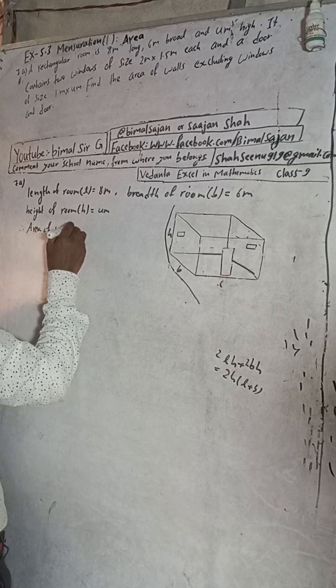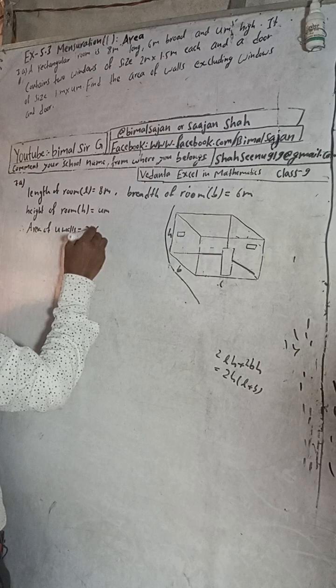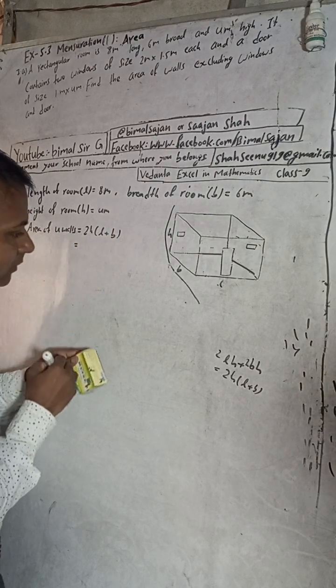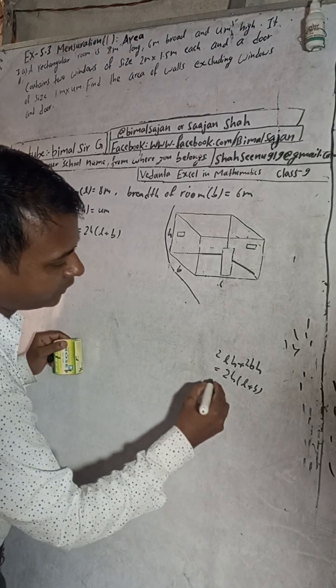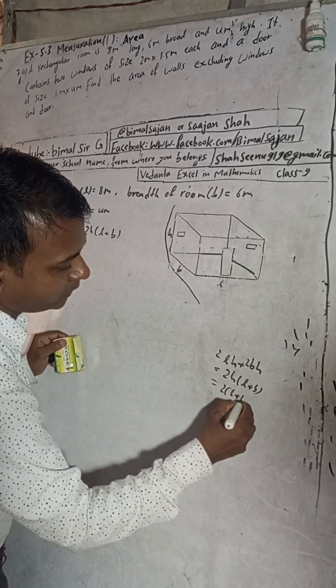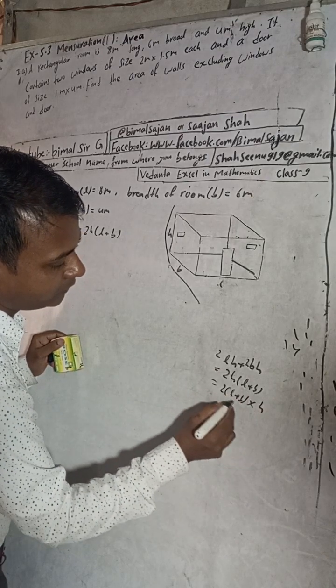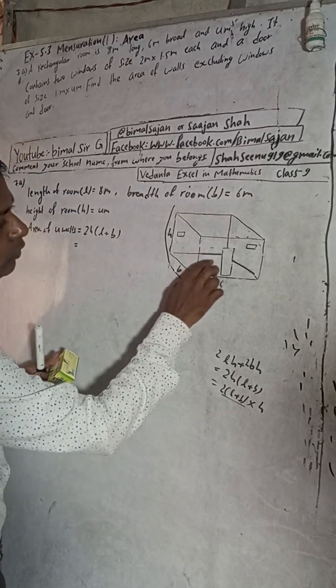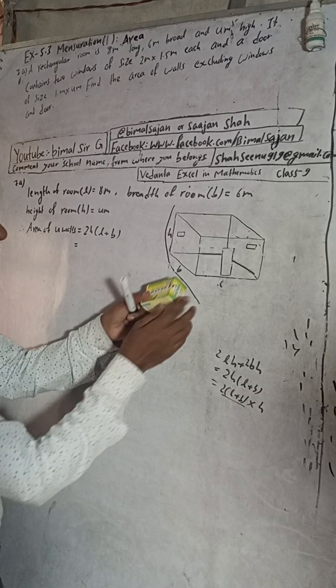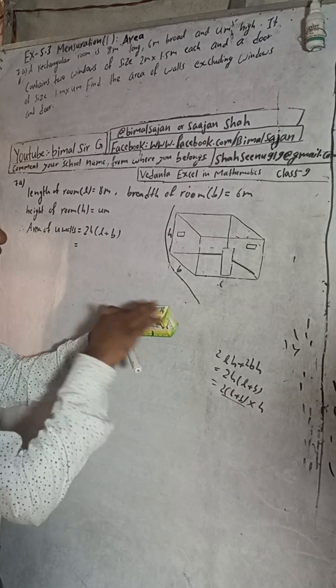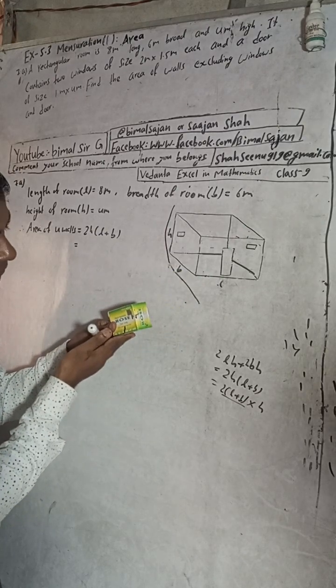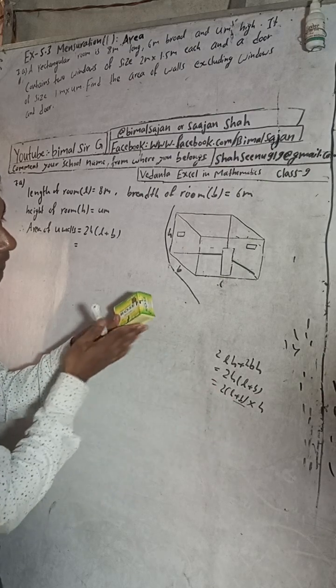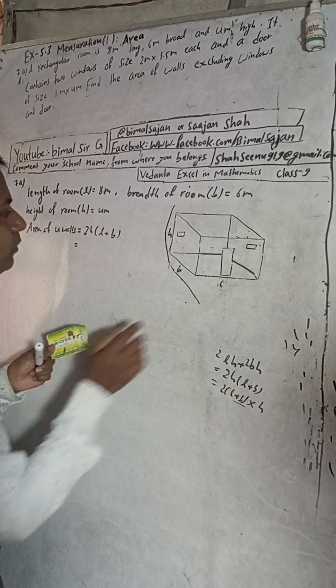Area of four walls is equal to 2H into L plus B, or we can write 2 into L plus B into H. That means perimeter of the base or cross section, this floor part or ceiling part, perimeter of this cross section or base into height. We get area of four walls.